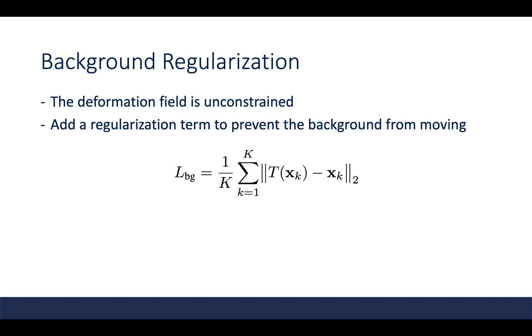The deformation field is unconstrained, and therefore everything is free to move around. So they optionally add a regularization term which prevents the background from moving. As shown in this equation, for each point in the background, when we apply the deformation field on it, it should remain the same. In addition to keeping the background points from moving, this regularization also has the benefit of aligning the observation coordinate frame to the canonical coordinate frame.